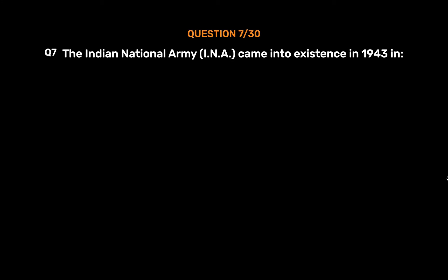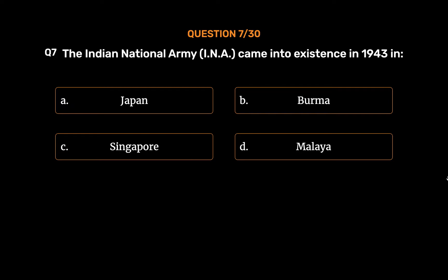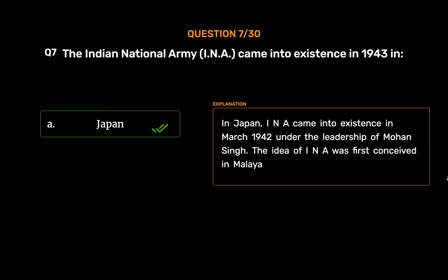Question No. 7. The Indian National Army (INA) came into existence in 1943 in: Option A: Japan. Option B: Burma. Option C: Singapore. Option D: Malaya. The correct answer is Option A: Japan. In Japan, INA came into existence in March 1942 under the leadership of Mohan Singh. The idea of INA was first conceived in Malaya.